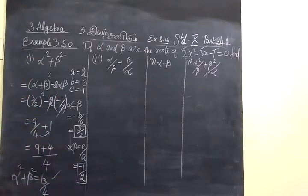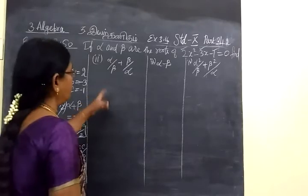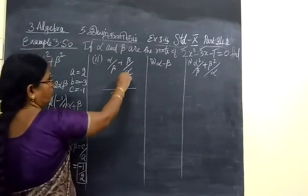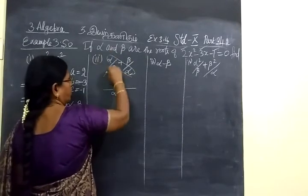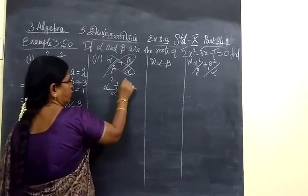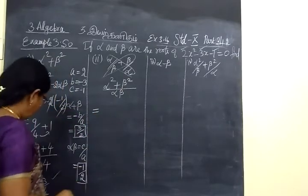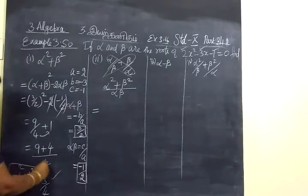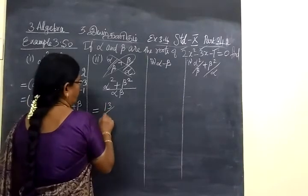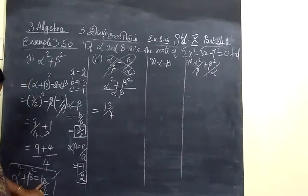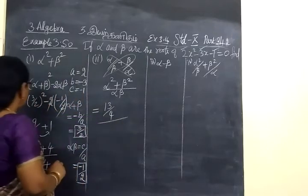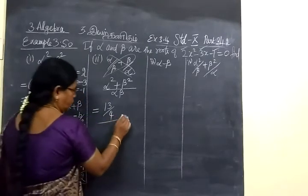Next, we are going to find alpha by beta plus beta by alpha. For this, take the LCM as alpha beta. Cross multiply: alpha into alpha gives alpha squared, and beta into beta gives beta squared. We already know the value of alpha squared plus beta squared equals 13 by 4. So this becomes 13 by 4 divided by alpha beta, and alpha beta is minus 1 by 2.